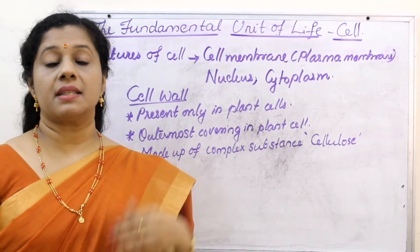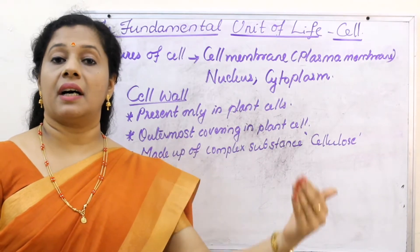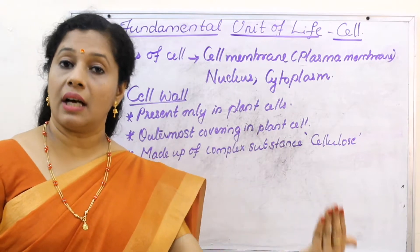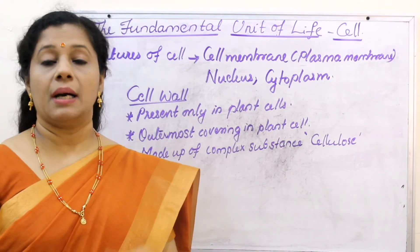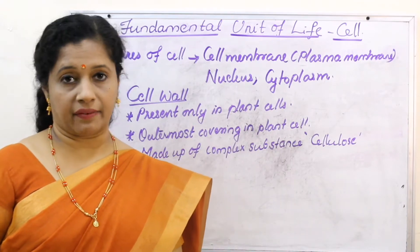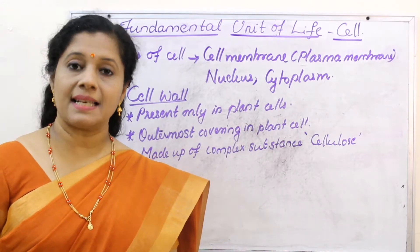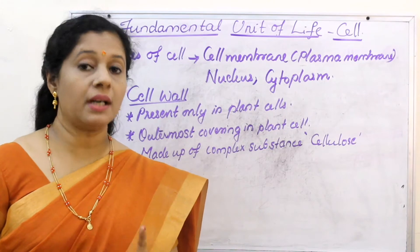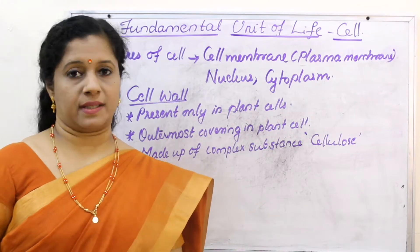Apart from plants, bacteria and fungi also have a cell wall, but their cell wall material is different. So plant cell wall is made up of cellulose.